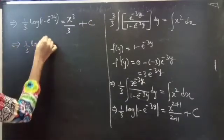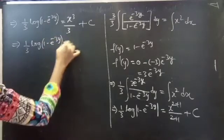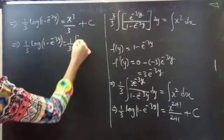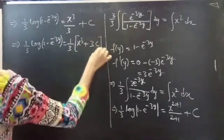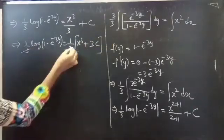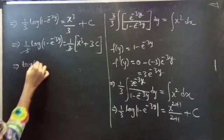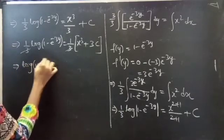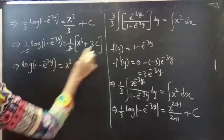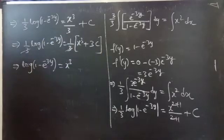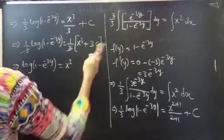So we have 1/3 times log(1 minus e to the power minus 3y) equals x cubed over 3 plus c. Taking 1/3 common on the RHS gives 1/3 times (x cubed plus 3c). Canceling 3 from both sides gives log(1 minus e to the power minus 3y) equals x cubed plus 3c. Since c is an arbitrary constant, we can write 3c as c.